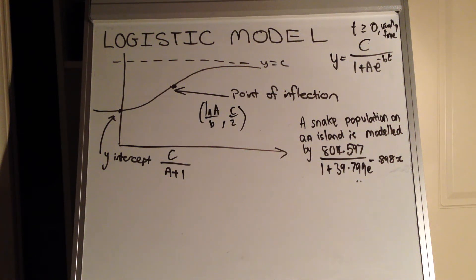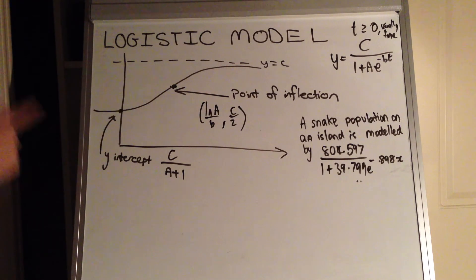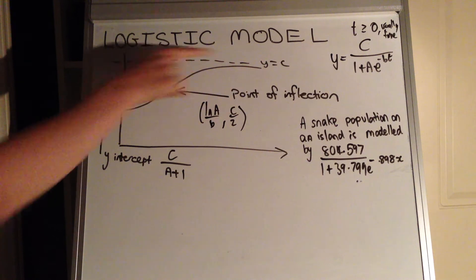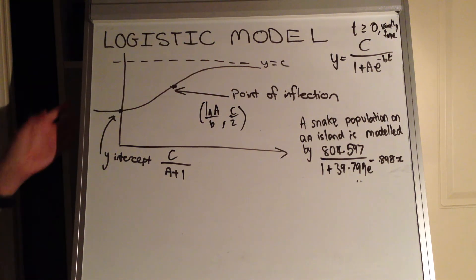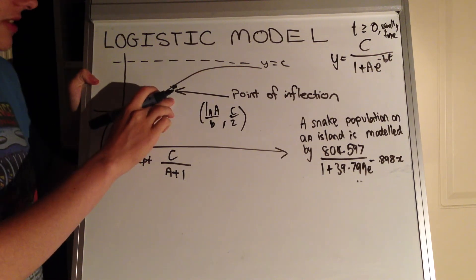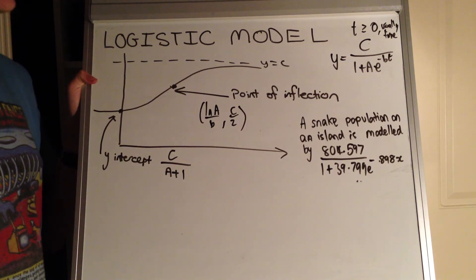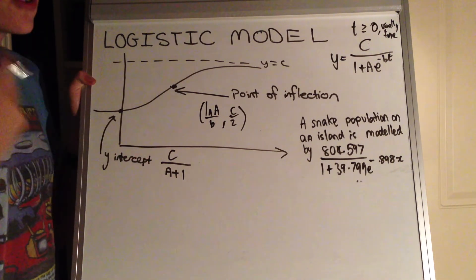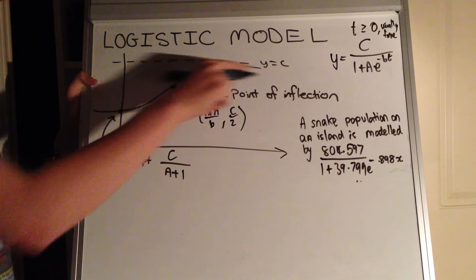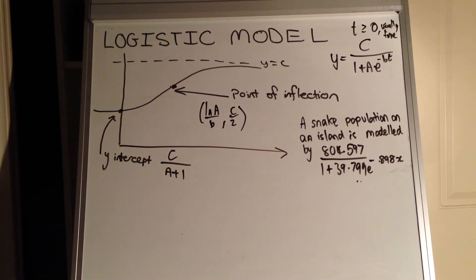Hello everyone. Today we're going to be looking at the logistic model. This is a model generally used in population modeling, representing a population where eventually resources will run out, so we end up with an asymptote against a certain value. It has an increasing rate of increase up to the point of inflection, and after this point of inflection the rate of increase is decreasing. This relates to population, where if resources run out we can't support a larger population, so eventually it levels off — you may even see this with the human population.